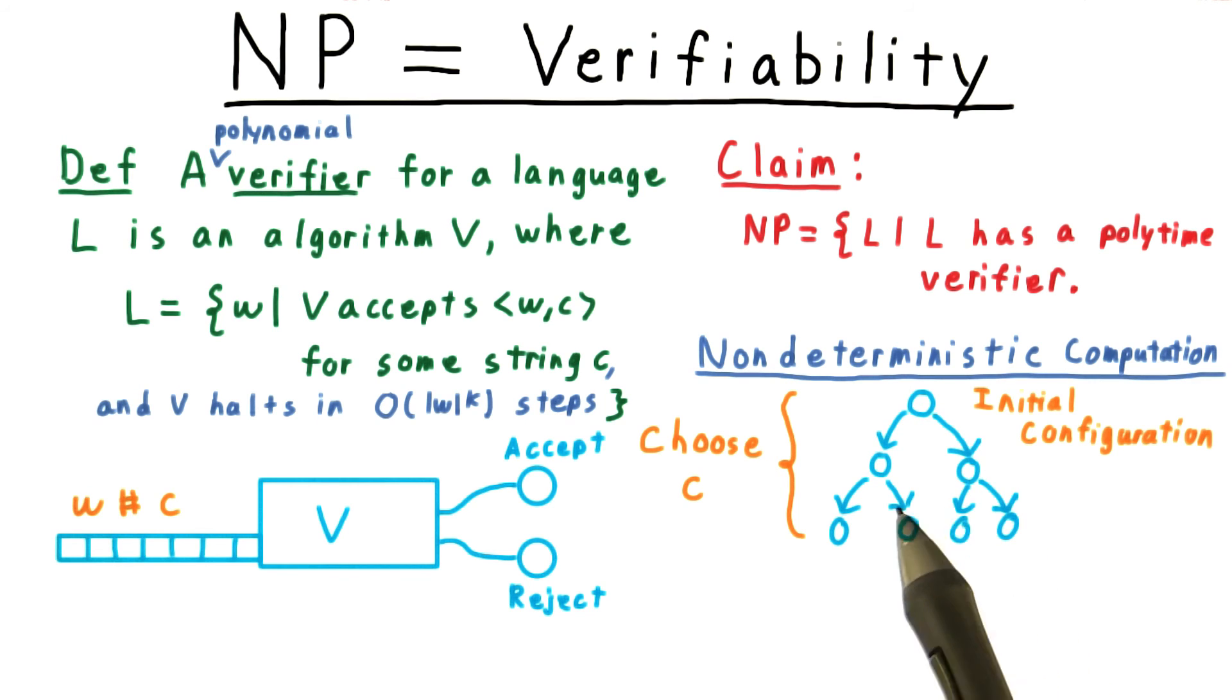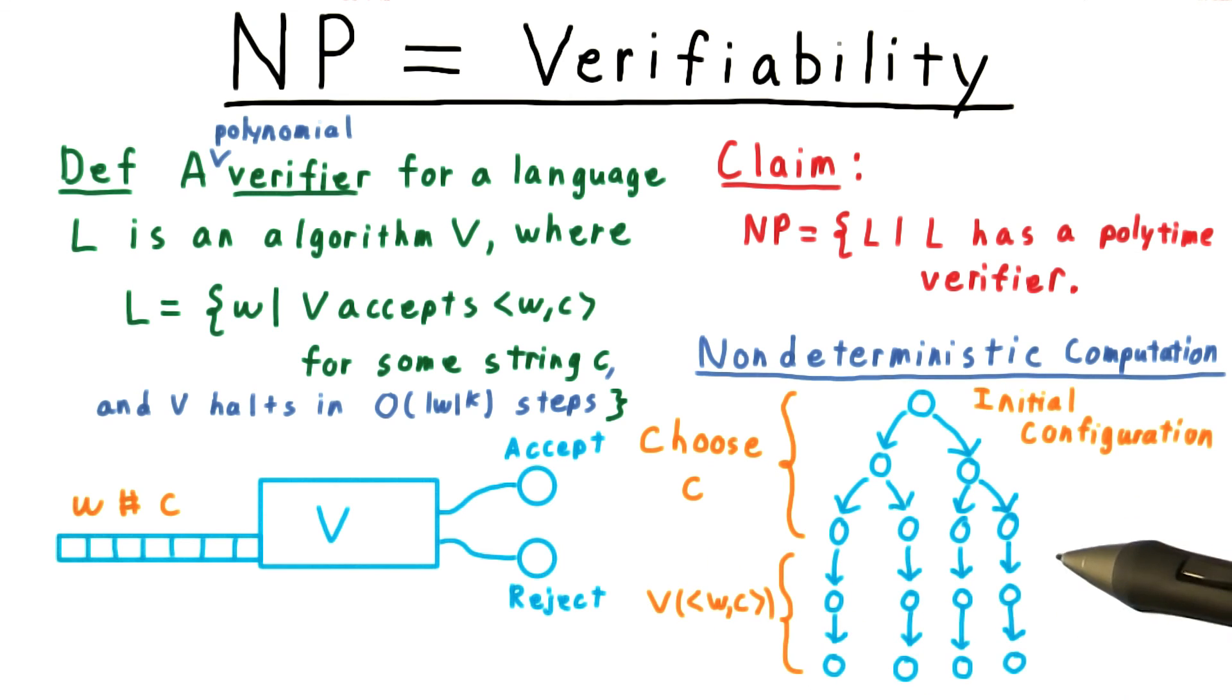Then it just deterministically simulates the verifier. If there's any certificate that causes V to accept, the non-deterministic machine will find it. If there isn't one, then the non-deterministic machine won't.